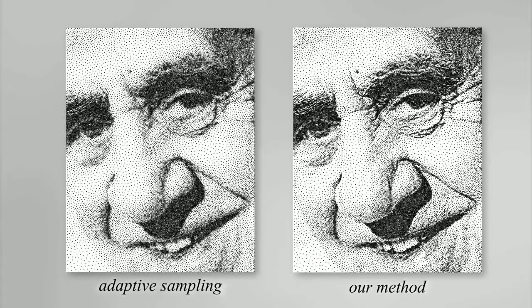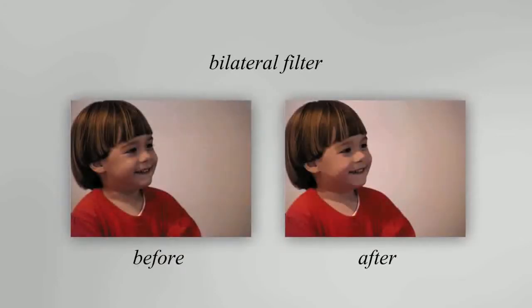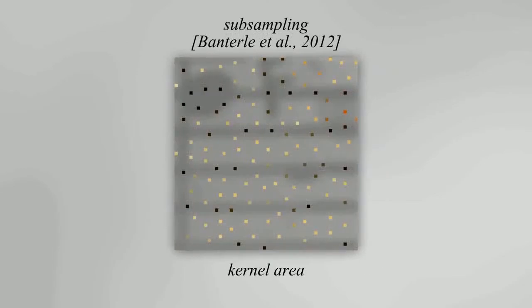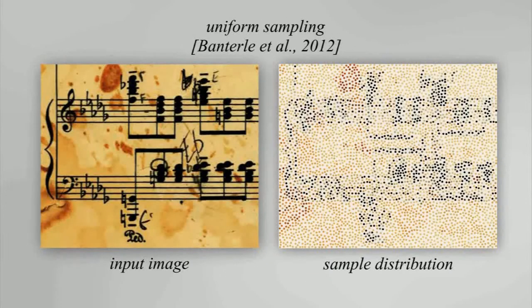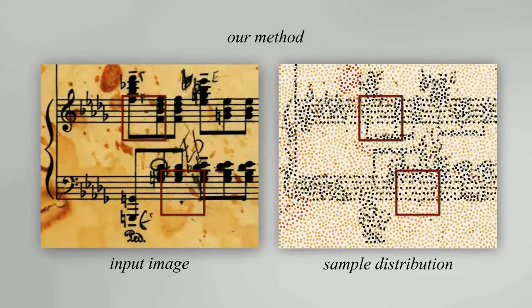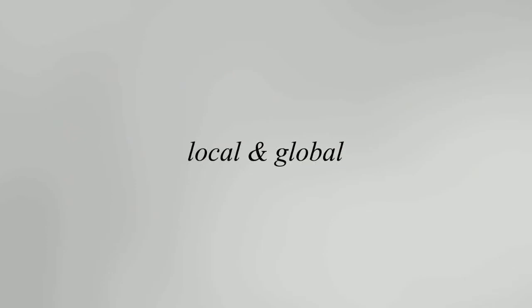Our method also performs better than prior adaptive sampling methods that do not explicitly consider features. Bilateral filtering has been applied to a variety of applications, but it is slower than linear filtering. Sub-sampling is a simple and effective acceleration method; however, previous methods use uniform sampling without considering image content and may miss features such as thin lines. Our method considers pixel color as the feature to provide more effective sub-sampling.